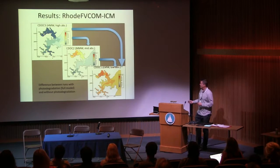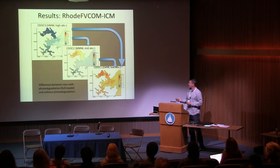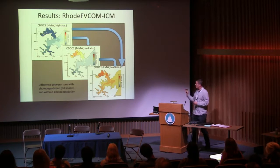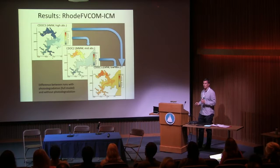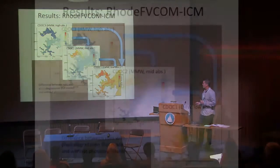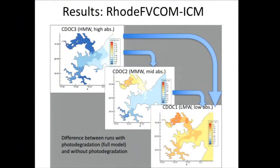I'm going to show you a little animation looking specifically at the new pools of color-dissolved organic carbon. These animations are going to show the difference between model runs with photodegradation on — this new photochemical degradation module that I've built — and model runs without it. So we're going to see how the carbon changes between these three different pools. These arrows show the transformation pathway. DOC3, the highest molecular weight and highest photolabile, gets transformed into both DOC2 and DOC1 and kind of cascades down.